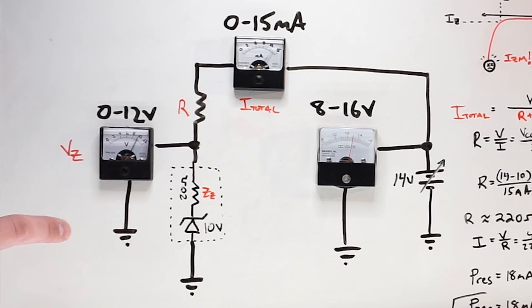I'm increasing the voltage and this remains constant at 10 volts. So even if I lower it, increase it, we're still at 10 volts. This guy is acting as a regulator.